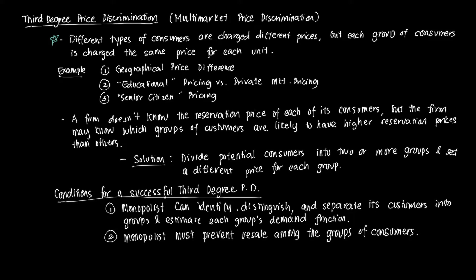What are typical examples of third-degree price discrimination? The most common one is a geographical price difference. For example, music streaming services such as Apple Music or Spotify charge differently across geographical locations. The price in the US might be different from the price in a developing nation like the Philippines, Thailand, or India, because people in the US are willing to pay more for that service.